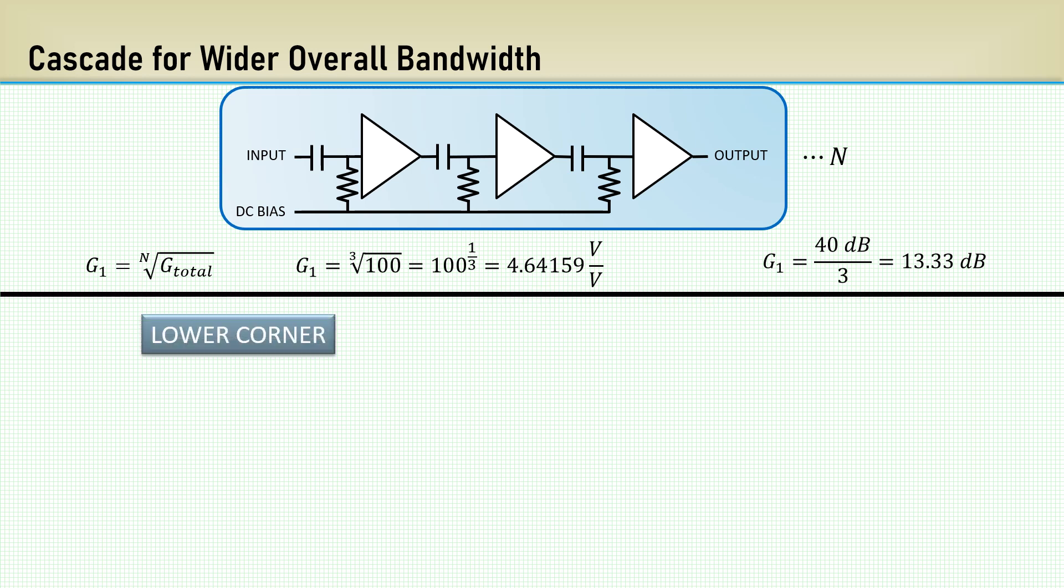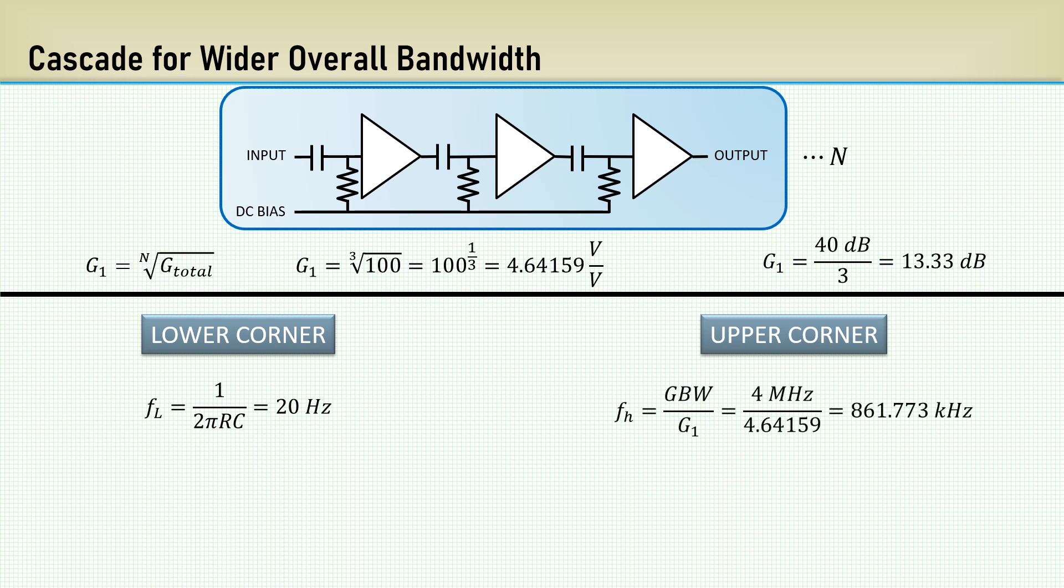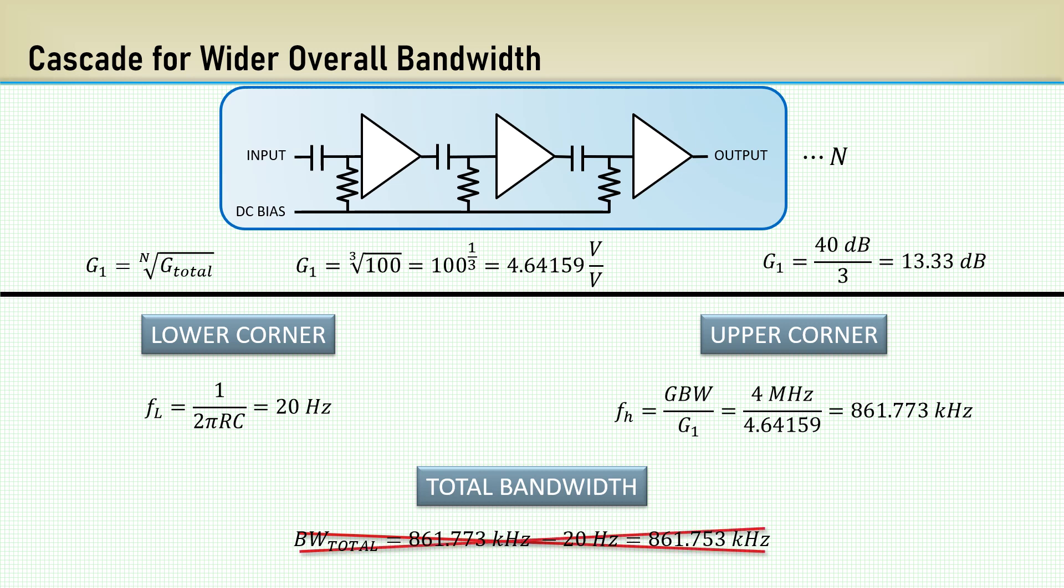The lower frequency will be set by the size of the coupling capacitors, and we will design for a lower corner frequency of 20 Hz. The upper corner frequency will be dominated by the op-amp gain bandwidth. 4 MHz divided by 4.64 gives us 861.773 kHz. That minus the lower 20 Hz corner gives us a total bandwidth of 861.753 kHz. Well, unfortunately, that doesn't work.